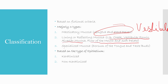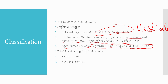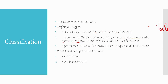Specialized mucosa is found on the tongue and contains taste buds, which we call papillas. We will be studying them in further lectures. Then, on the basis of type of epithelium, it is classified as keratinized and non-keratinized, which we will be studying in detail.